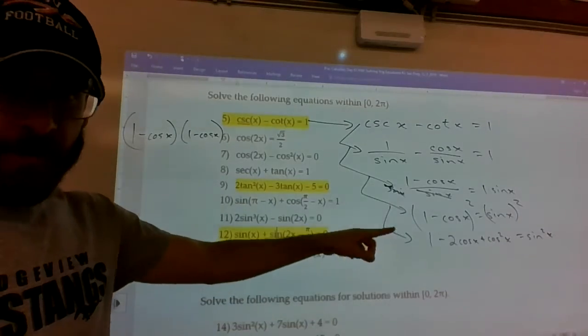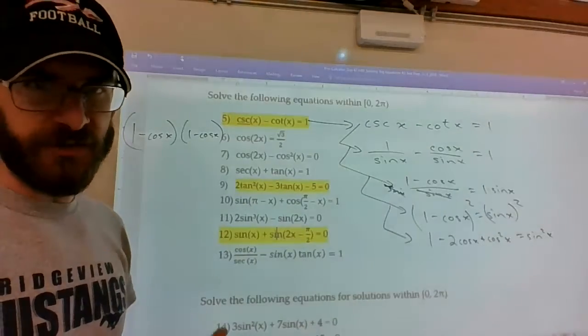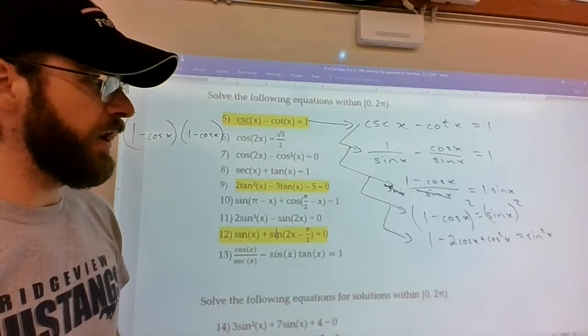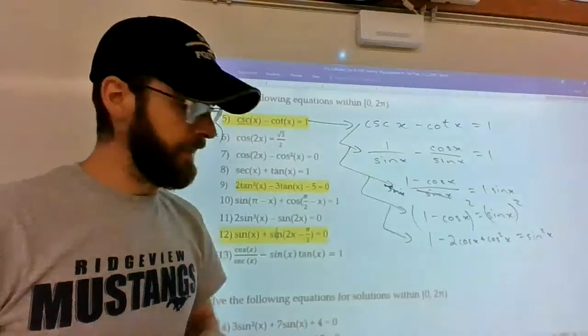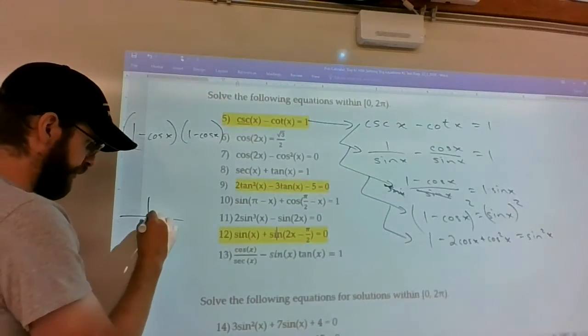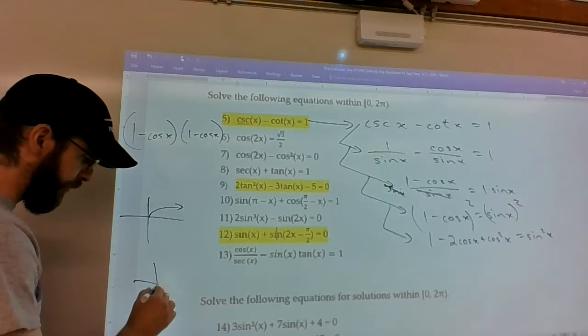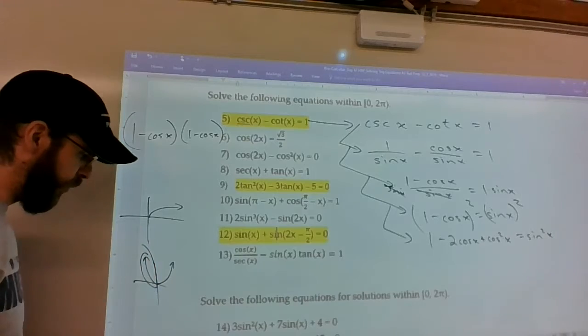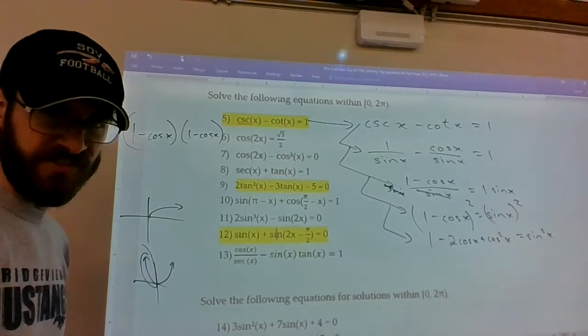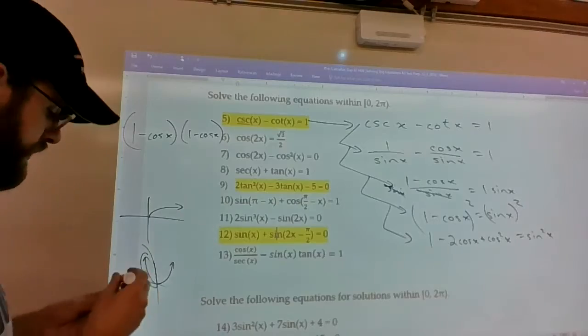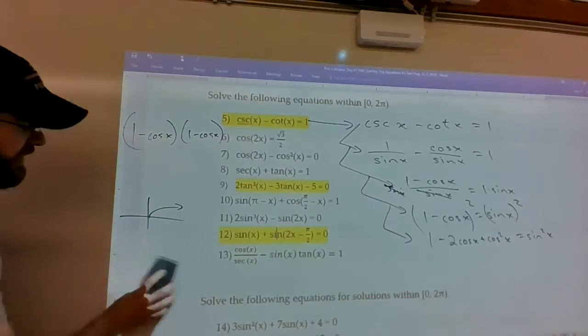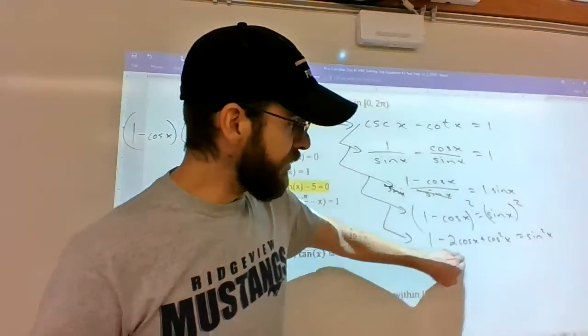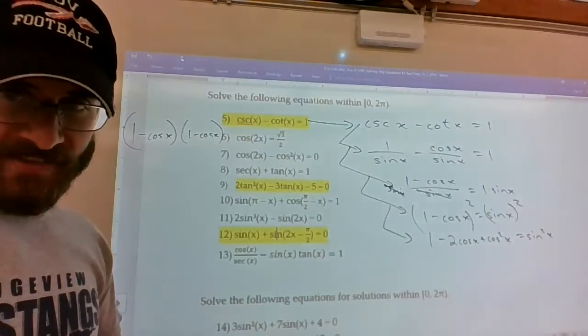And it's worth noting that squaring both sides is also an extraneous solution alert. Because, again, a lot of times it shows up with square roots. Like, here's what a square root function looks like. Here's what a parabola function looks like. You can almost see the fact that they're almost doubling one of the parts to give more solutions that really shouldn't exist there from the beginning. So, there's a lot to keep in mind when it comes to fake solutions.